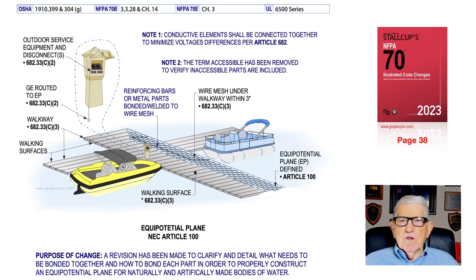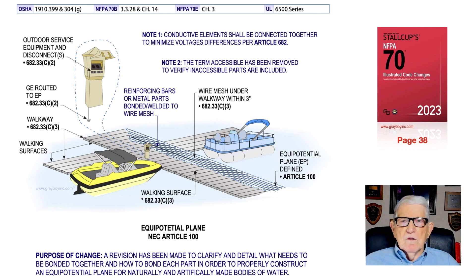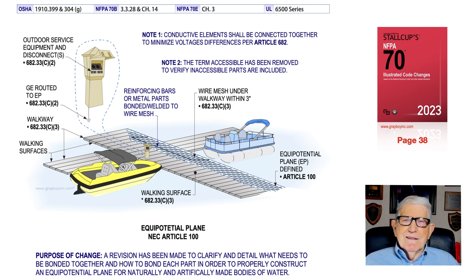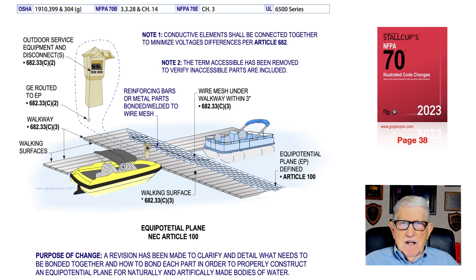In Note 2, the term 'accessible' has been removed from the 2023 edition — it's no longer there as it was in 2020. Reinforcing bars, metals, welded wire mesh — all should be bonded in whether accessible or not, where you naturally have means to access it. Everything shown in blue in the illustration pertains to the change; black print is additional information. The main purpose of this change is that they deleted 'accessible' and said all steel, mesh, and rebar should be bonded together.